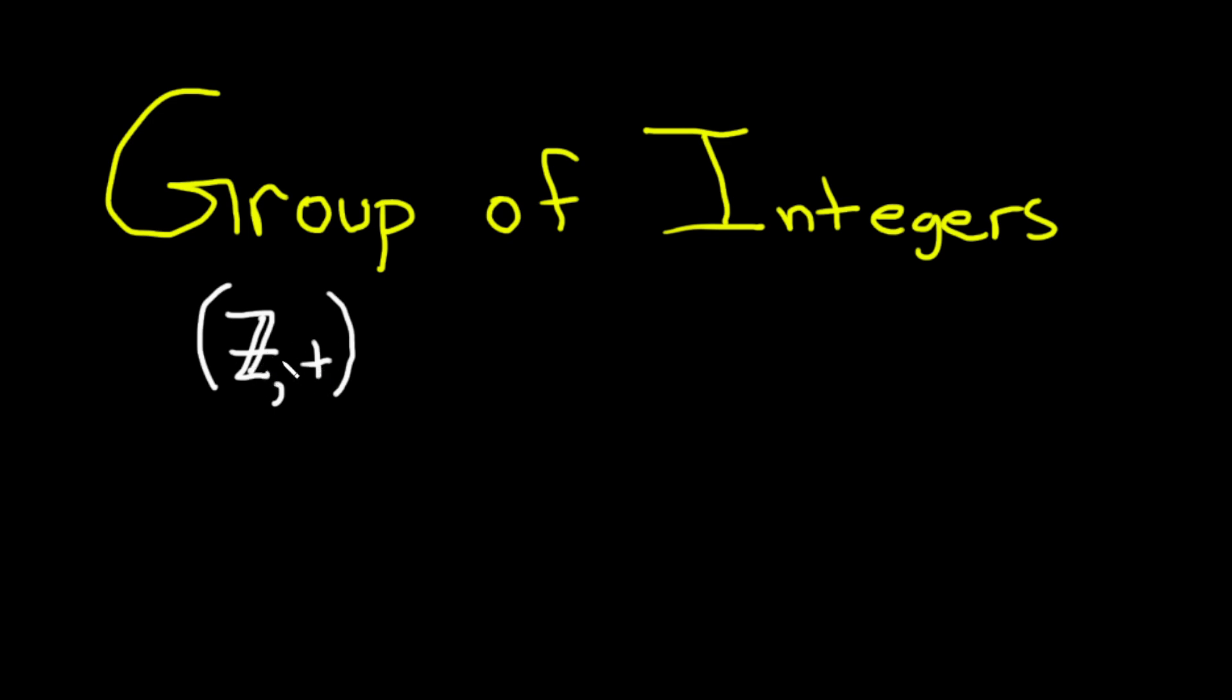Given any two integers the sum is also an integer, so we have closure under that group operation. And this is a group because it satisfies all of the properties that a group has to satisfy. So it's a set that's not empty with a binary operation. The operation is associative, so let's write that down.